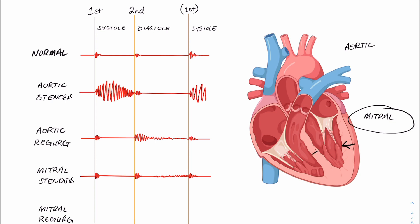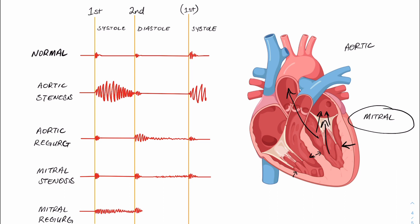Moving on to mitral regurgitation. The first heart sound represents the beginning of systole and is heard through the closing of the atrioventricular valves — the mitral being one of them. It's the pressure difference between the atria and the ventricles that would normally snap the mitral valve closed. However, because it's incompetent and allowing backflow, we don't get a clean first heart sound. Because this backflow occurs during contraction, we would expect to hear blood flowing through the regurgitating valve throughout all of systole, until diastole occurs and we hear the normal second heart sound caused by closure of the semilunar valves.